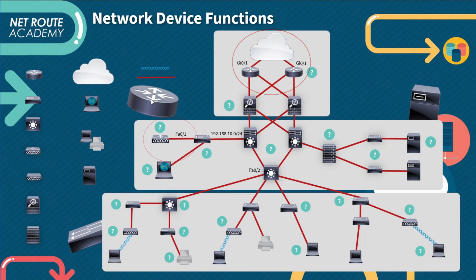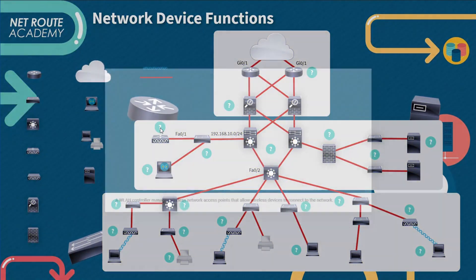It is also common to include the network address of the segment in the 192.168.10.0/24 format. In the example shown in the figure, 192.168.10.0 indicates the network address, /24 indicates the subnet mask, and .1 and .2 at the device end indicate the IP addresses of the interfaces.